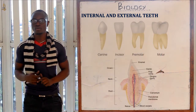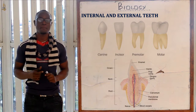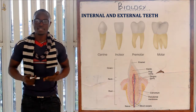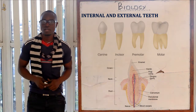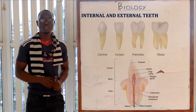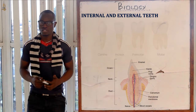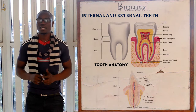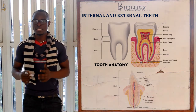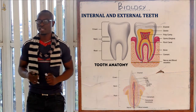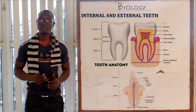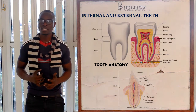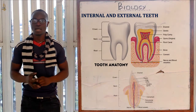Incisors and canines have only one root, premolars have two roots, and molars have three roots. Now let's look at the internal structure of the teeth. The bulk of the teeth is made up of the enamel, the dentine, the pulp cavity, the cement, and finally the periodontal membrane.